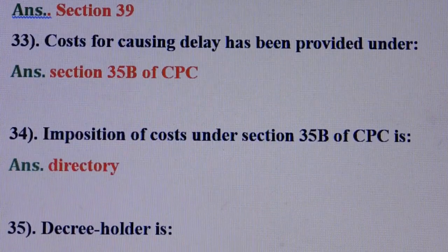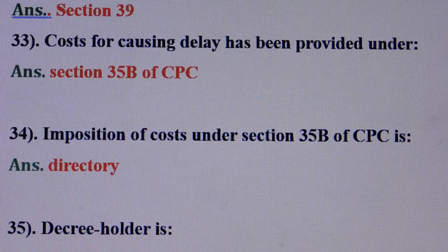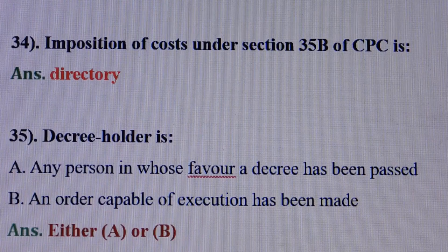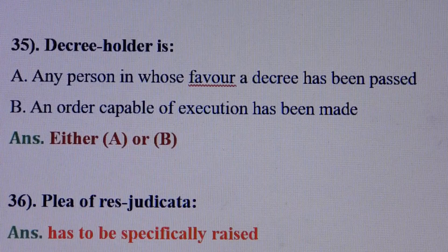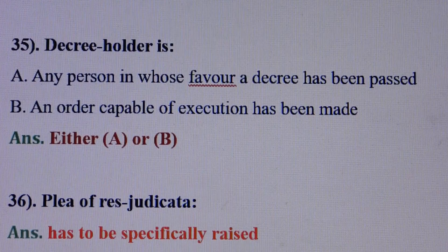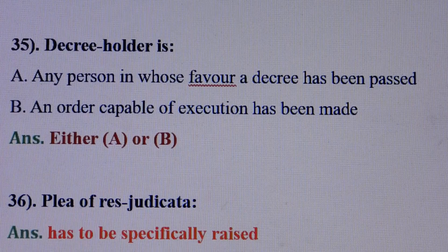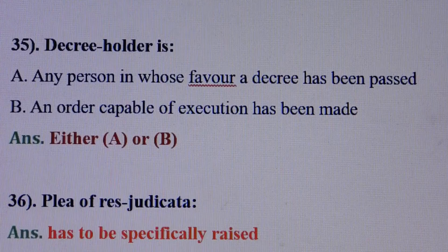Question number 33: Cost for causing delay has been provided under — answer is: section 35B of CPC. Question number 34: Imposition of cost under section 35B of CPC — answer is: directory. Question number 35: Decree-holder means — answer is: either A or B. That means: Option A — one in whose favour a decree has been passed; Option B — one in whose favour an order capable of execution has been made.